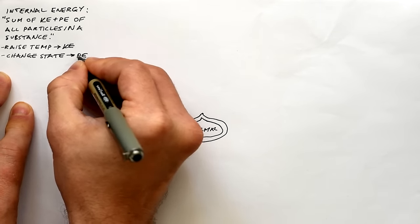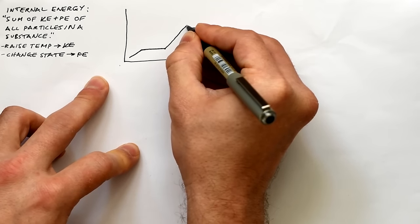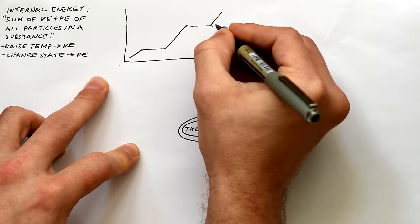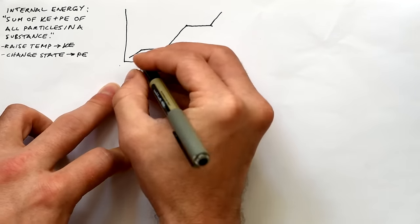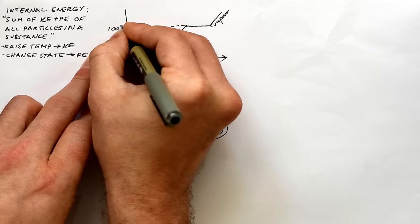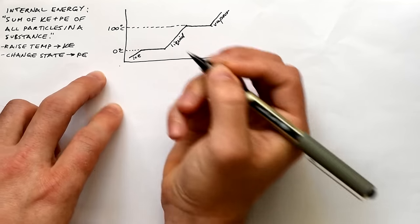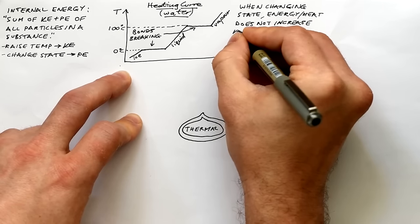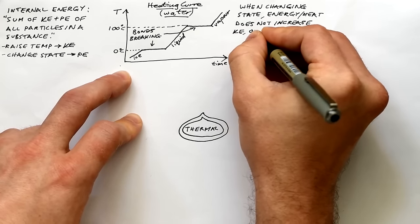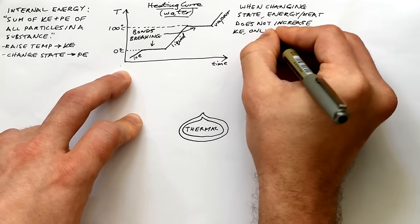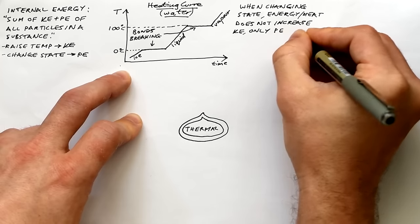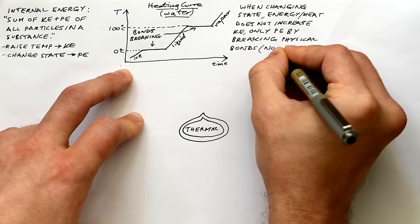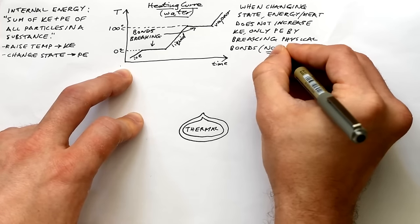We can draw a heating curve for something like ice, and over time as we're giving it heat we can see that the temperature goes up but then it flattens out when it changes state at zero and a hundred degrees Celsius. When things are changing states — specifically solid to liquid or liquid to gas — the heat or energy that goes in is not contributing to kinetic energy, only potential energy by breaking bonds.